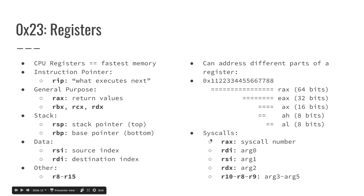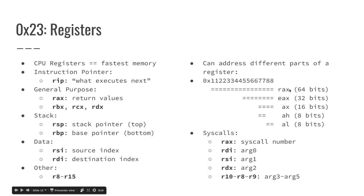Registers can actually be addressed not by the entire 64 bits — you can address different parts of a register, and in assembly the register name will appear different to signify what part you're addressing. For RAX for instance: the entire thing is RAX, the lowest 4 bytes are EAX, the lowest 2 bytes are AX, the highest byte of the lowest 2 bytes is AH, and the lowest byte of all is AL. This naming convention with R and E prefixes and X, H, L suffixes applies to all general purpose registers.